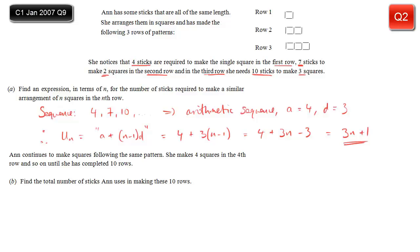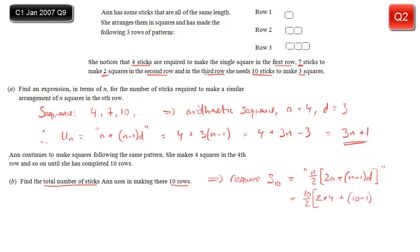Part b: she carries on until she's done ten rows. So how many sticks does she need to make ten rows? We want the total, so this means we want S10. Using the formula n over 2, brackets 2a plus n minus 1, d: n is 10, so 10 over 2 is 5. 2 times 4 is 8. 9 times 3 is 27. So we've got 5 multiplied by 8 plus 27, which is 35, giving 175. That's the total number of sticks she needed for those ten rows.